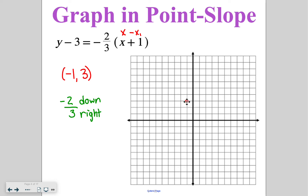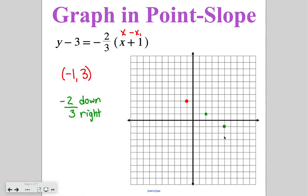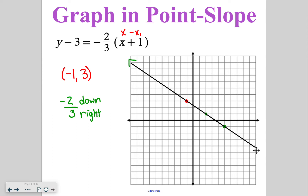So I'm going to go down 2 and right 3. You only need those 2 points, but if you wanted to go again you could go down 2 and right 3 and continue that pattern. Then go ahead and connect those with a straight line through all the points. Just like last chapter, make sure you put arrows on the ends to show the line is continuous and keeps going.